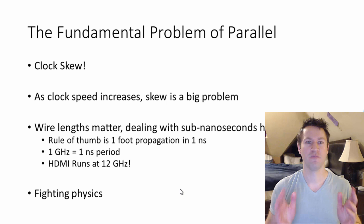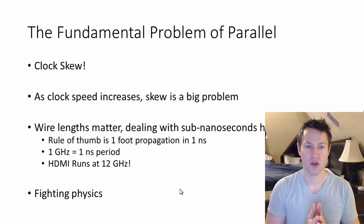The fundamental problem of parallel interfaces is something called clock skew. Basically what it means is, as your clock speed increases, skew becomes a big problem. We're dealing with really fast data rates here in the gigabits per second, gigahertz range. We saw 30-something transceivers on the first page that were 12 gigahertz, gigabits per second. There's a rule of thumb that electricity travels down a wire around like one foot of wire in one nanosecond.